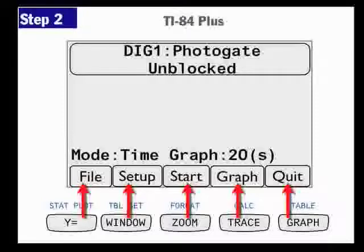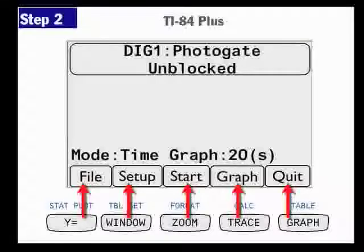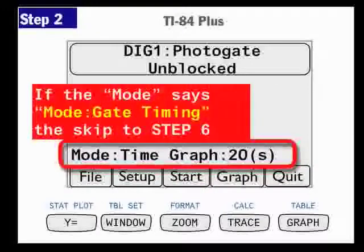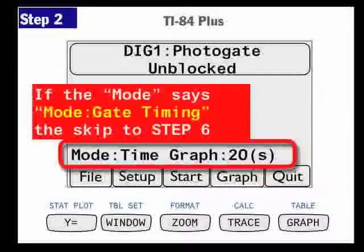Now in this case, it says mode: Time Graph, 20 seconds — that's the wrong mode. So if your calculator says this, we need to go through and set it up, telling it what mode to use and what kind of probe is connected. But if it already says gate timing mode instead, then you're okay — you can skip part of this video and go right to step six. But we're on step two right now, so let's say it says Time Graph, 20 seconds.